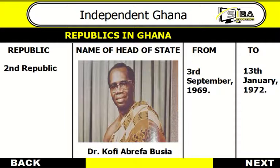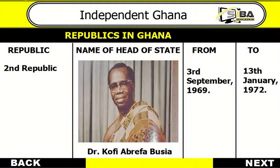On 3rd September 1969, Ghana was ushered into her second republican constitution, with Dr. Kofi Abdufa-Busia, pictured on your screen, as prime minister and Edward Akufu-Addo as ceremonial president. However, their rule only lasted until 1972, when their government was overthrown by I. K. Echampong, bringing an end to the Second Republic.